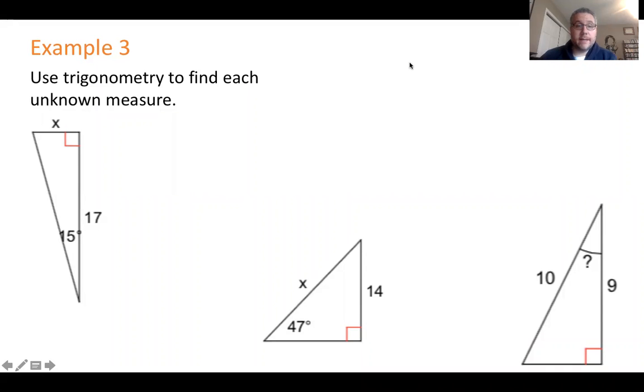In example three, we're going to look at three different scenarios where you could use trigonometry to find unknown sides and angles. So the first thing I'm going to write is our little jingle, SOH CAH TOA, to help us remember the values of these three trig ratios.